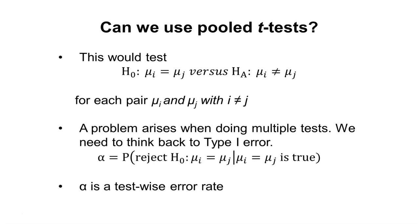So again, we might ask the question, can we use pooled t-tests? So this would test the null hypothesis that mui equals muj versus the alternative hypothesis that mui is not equal to muj. And we might do this for every pair mui and muj with i not equal to j. And so if we had lots of different samples from say 1 through 100 different samples.